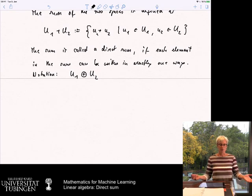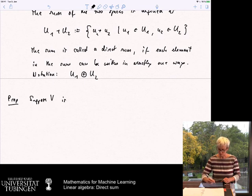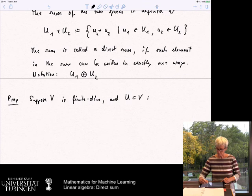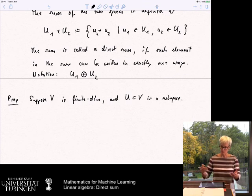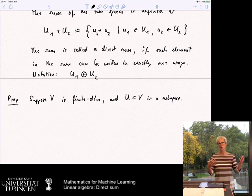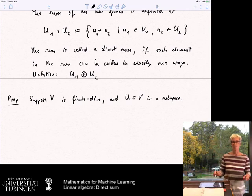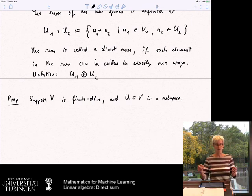And now we can define what a complement space is. And it's a definition and a proposition at the same time. Suppose that v is finite dimensional and that u is a subspace. And the statement is now, there exists another subspace that we are going to call w, and in words it's going to be the complement, such that u and this other subspace jointly are a direct sum that spans the whole space.